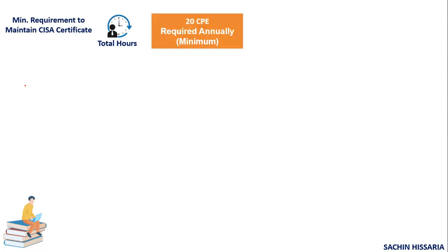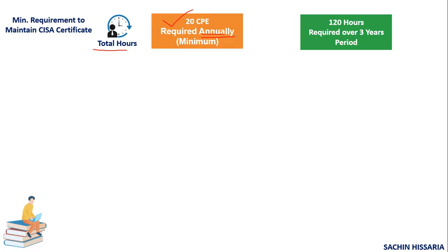In order to maintain a CISA certificate, you will require at least 20 hours of CPE in one year. Every year you have to complete at least 20 hours of CPE to maintain your certificate. If we combine the CPE requirement over three years, you need to complete 120 hours of CPE in total.